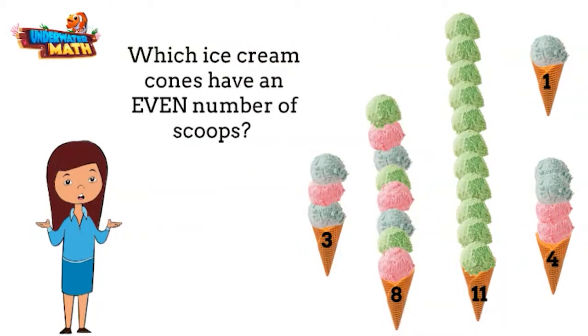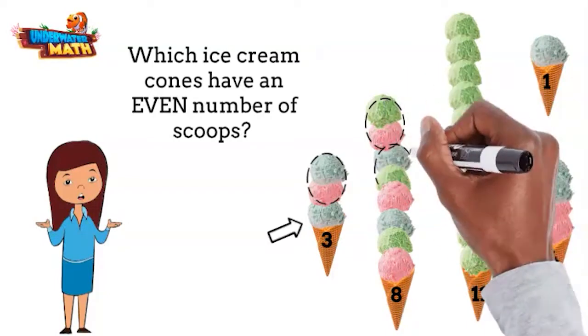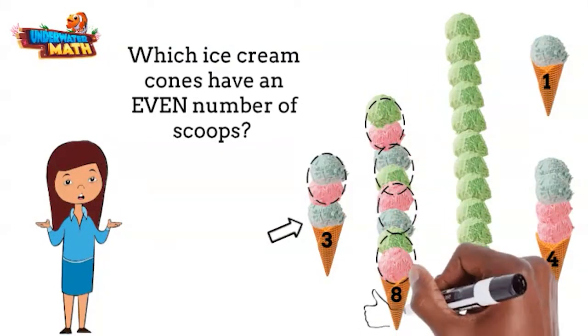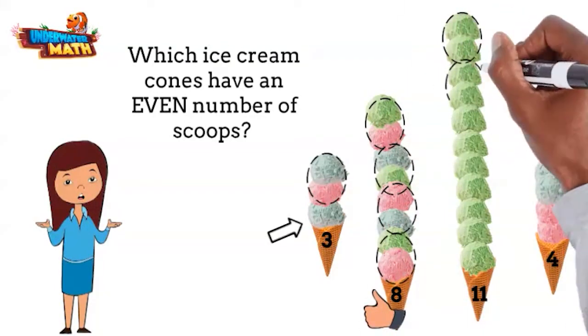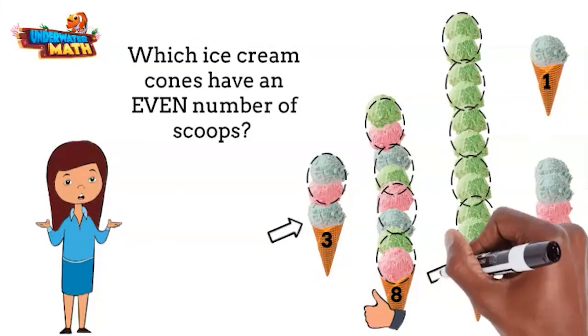The cone with 3 scoops has a pair and one leftover. That means it's odd. This one can be broken into pairs, so 8 is even. Here we go, 11 scoops. We have pairs until this very last scoop. 11 is odd.